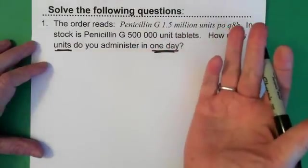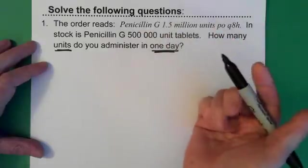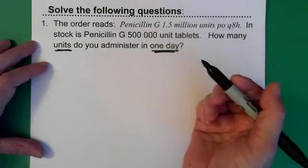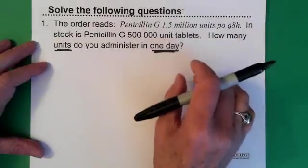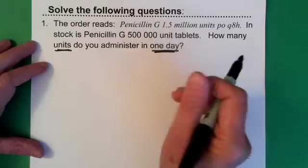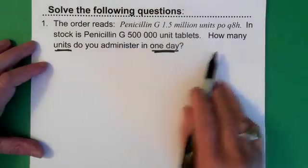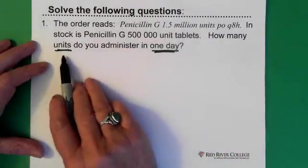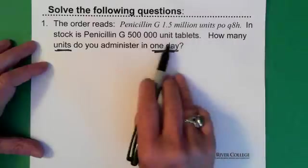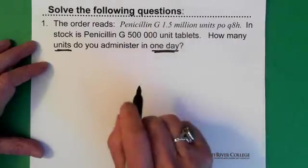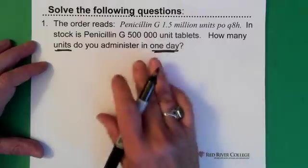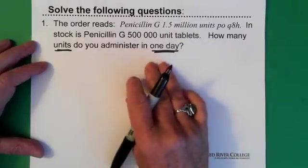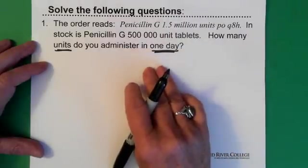So, sometimes when we look at questions like this, we think, oh, we'll just automatically go to D over H times V. But the question is not asking for volume or milliliters or tablets. The question is asking for units. So, it's always important to just take your time because sometimes we get into the habit of D over H times V. It's important to stop and take a look at the question. What am I being asked for?